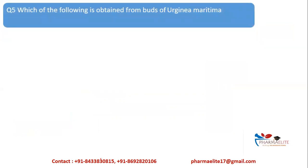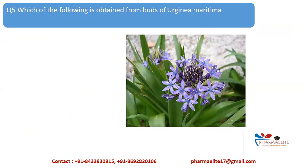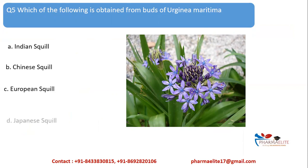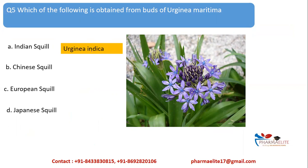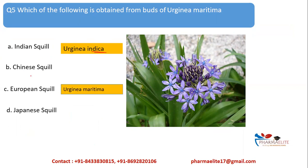Next question: which of the following is obtained from bulbs of Urginea maritima? This is a picture of Urginea maritima. The options are Indian squill, Tiny squill, European squill, and Japanese squill. For Indian squill the source is Urginea indica — you can easily remember: Indian = indica. Chinese and Japanese squills are different species. For European squill, the source is this plant, Urginea maritima, so the correct answer is option C: European squill.